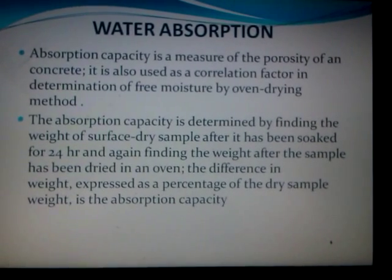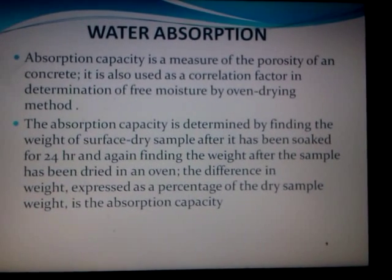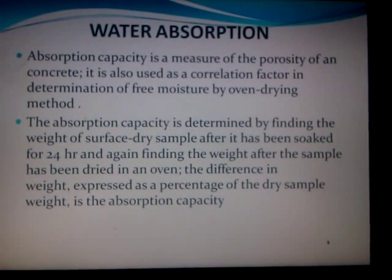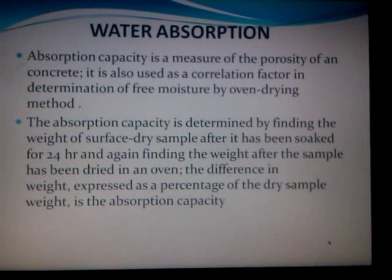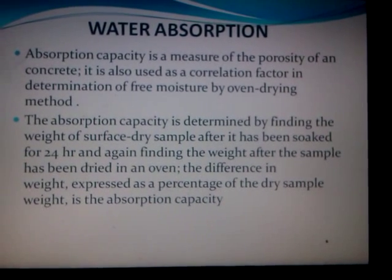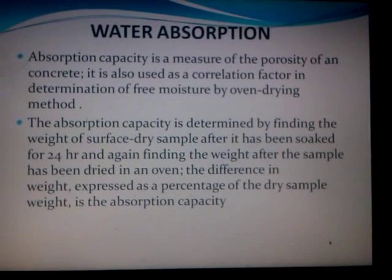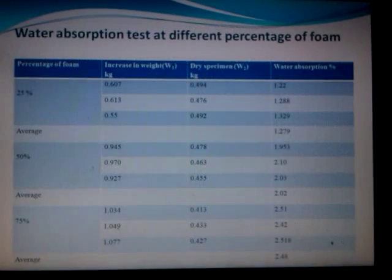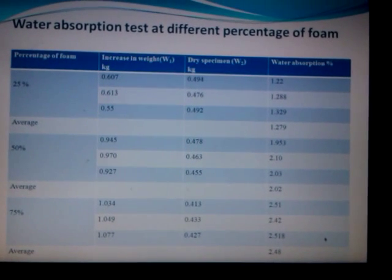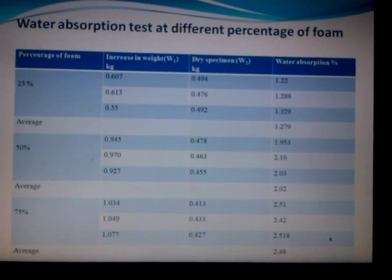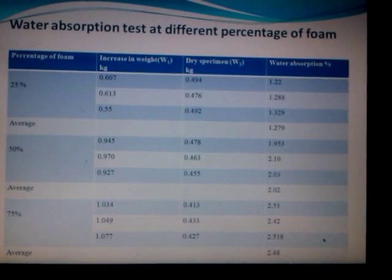Water absorption: absorption capacity is measured due to the presence of voids. It is determined by finding the weight of the dry sample after it has been soaked for 24 hours, then finding the weight after drying in the oven. Water absorption percentages for different foam percentages — 25%, 50%, and 55% — are shown, and the average value for the three different samples is calculated.